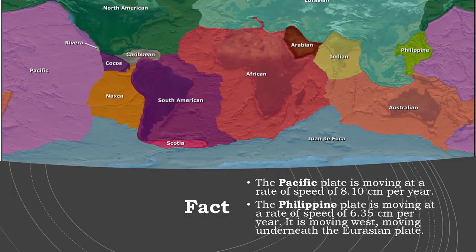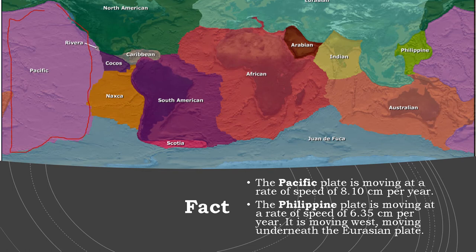Here is an interesting fact about plates. Did you know that the Pacific plate is moving at about 8.10 centimeters per year? And did you know that the Philippine plate is also moving at about 6.35 centimeters per year?